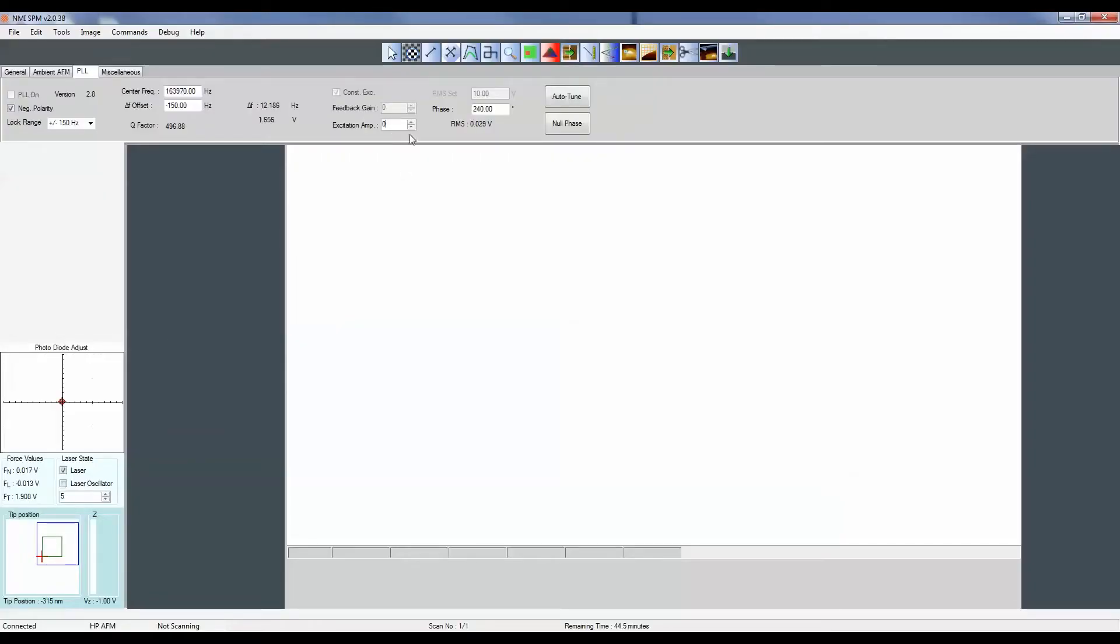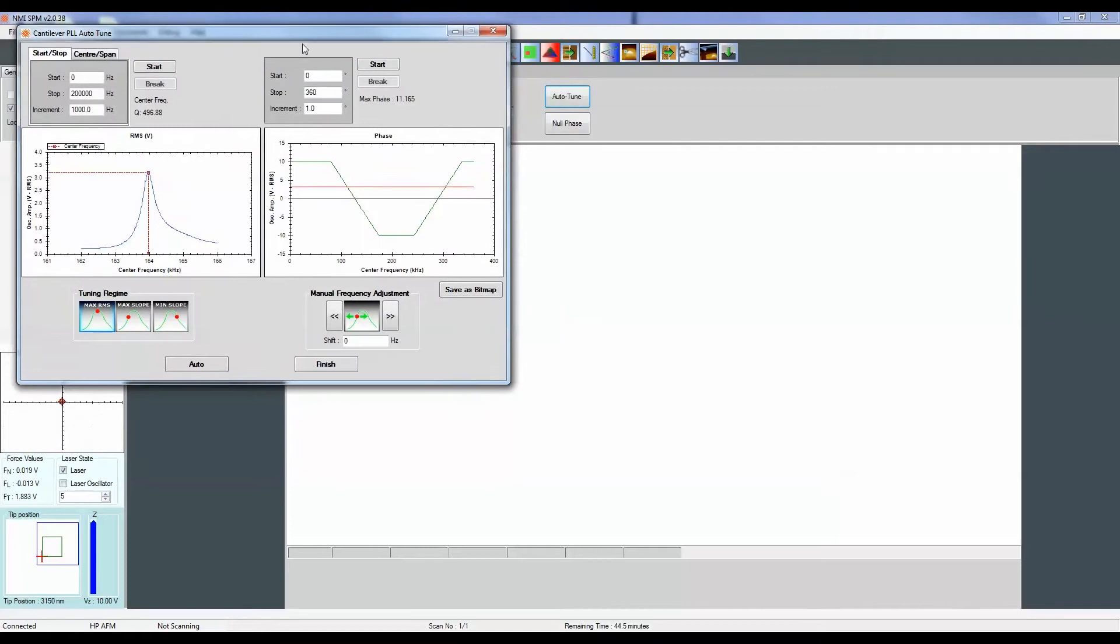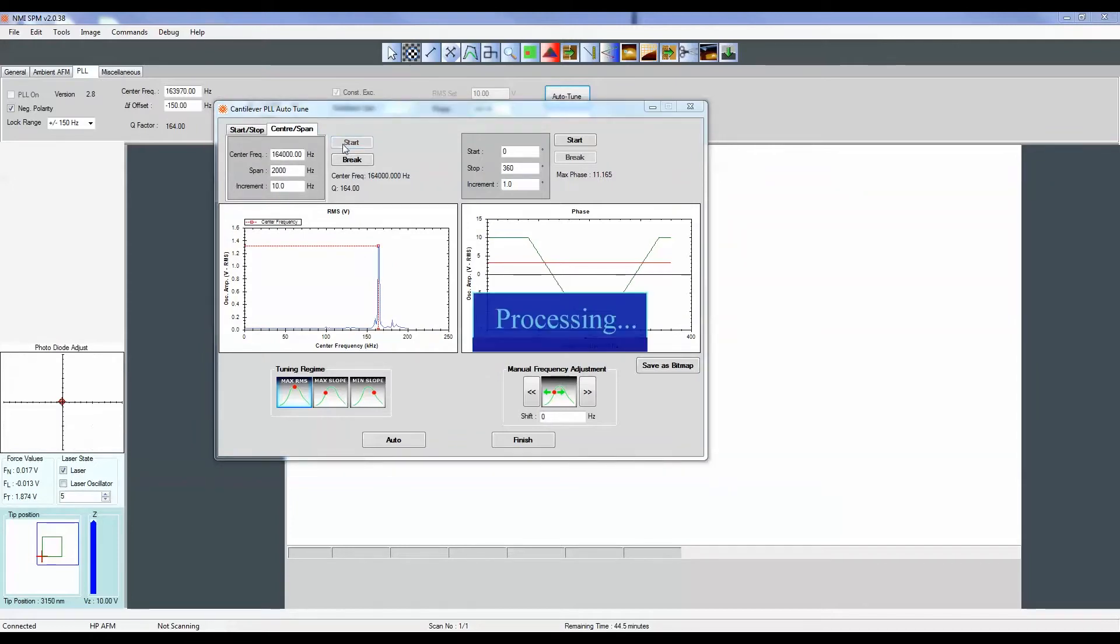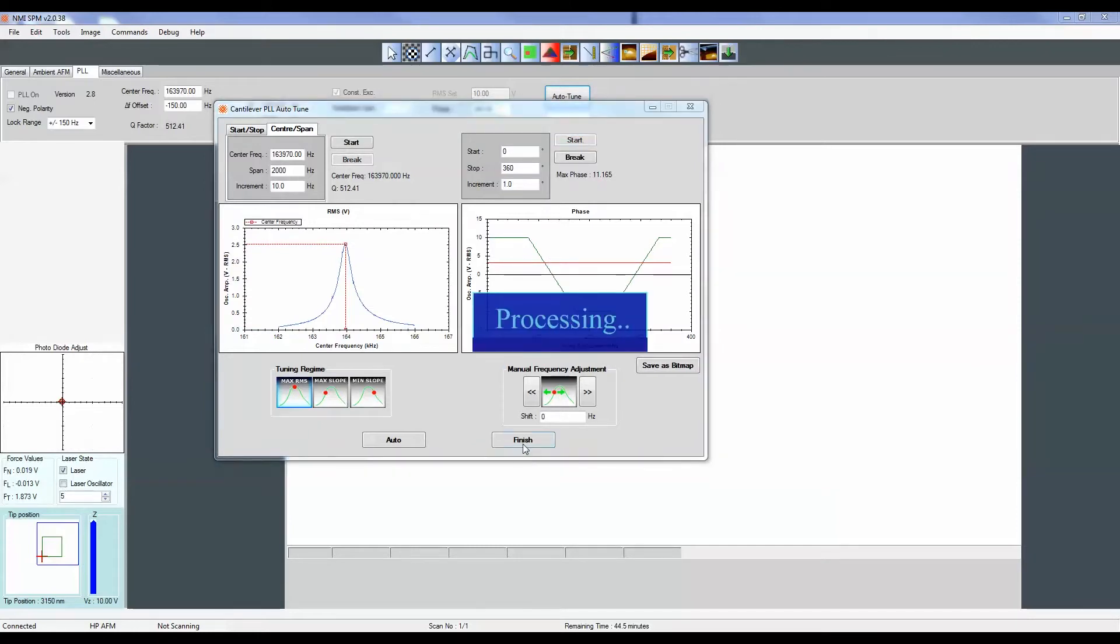In order to tune your cantilever, set the excitation value at 2. Click Auto-tune and then click Start. Then click the center span tab and click Start again. Finally, click the Start button on the phase menu.